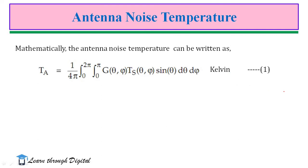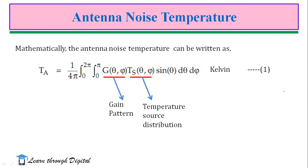Mathematically, the antenna noise temperature can be written as TA = (1/4π) ∬ G(θ,φ) · TS(θ,φ) · sin(θ) dθ dφ, where G(θ,φ) is the gain pattern or power pattern of the antenna with angular space coordinates θ and φ, TS(θ,φ) represents the temperature source distribution with respect to angular distribution, and dΩ is the beam area or beam solid angle. The total antenna noise temperature is obtained from source temperature distribution TS(θ,φ) and the antenna gain pattern. The unit for antenna noise temperature is Kelvin.